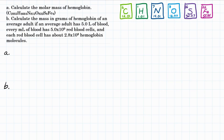The problem says: A, calculate the molar mass of hemoglobin, and B, calculate the mass in grams of hemoglobin of an average adult. If an average adult has 5.0 liters of blood, every milliliter of blood has 5.0 times 10 to the 9th red blood cells, and each red blood cell has about 2.8 times 10 to the 8th hemoglobin molecules.